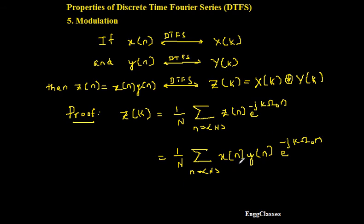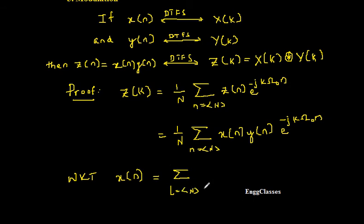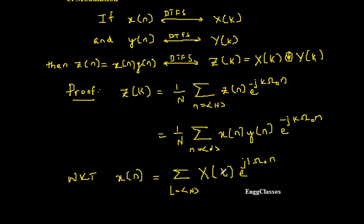Now in place of z of n I will substitute x of n into y of n. What is x of n? From the definition of DTFS we know that x of n is equal to summation over l over the range capital N of x of l e to the power j l omega 0 n. So now I will substitute this in the above expression.